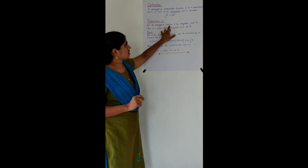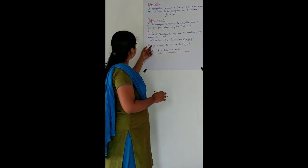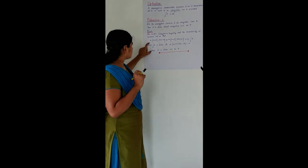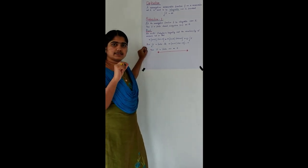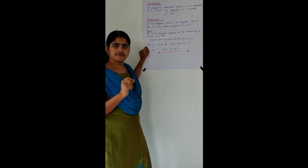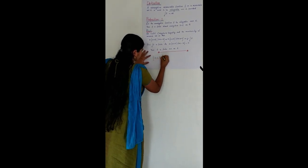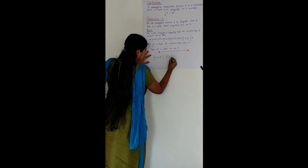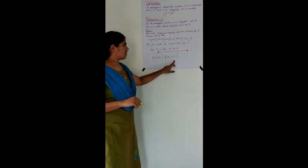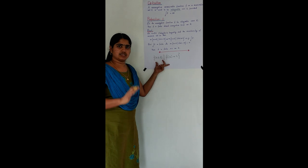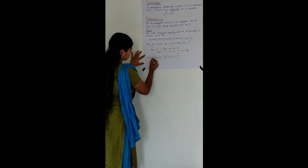Since F is a non-negative measurable function, F being measurable means that for each extended real number C, the set of all X in E such that F(X) equals C has a well-defined measure. So we can talk about the measure of this set.